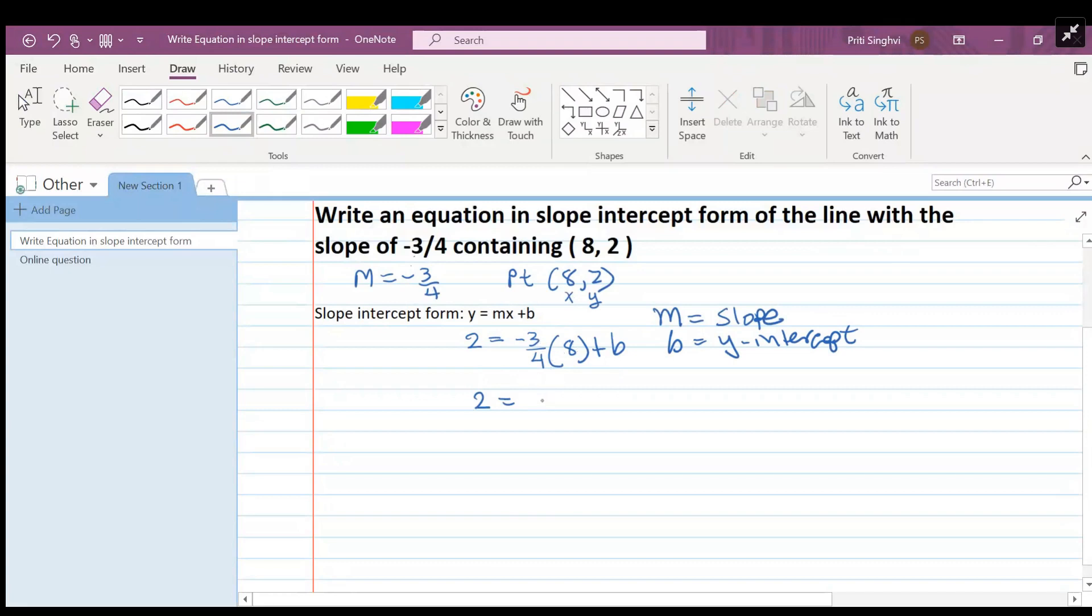Negative three-fourths times eight is the same thing as negative three times eight divided by four. Negative three times eight is negative twenty-four, divided by four gives you negative six. So two equals negative six plus b. Adding six to the other side, b equals eight.